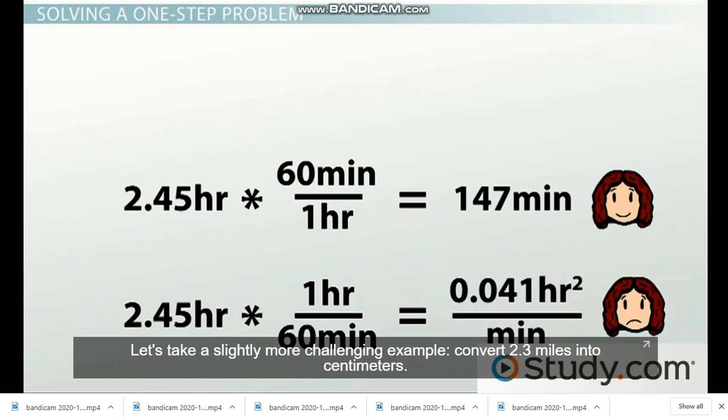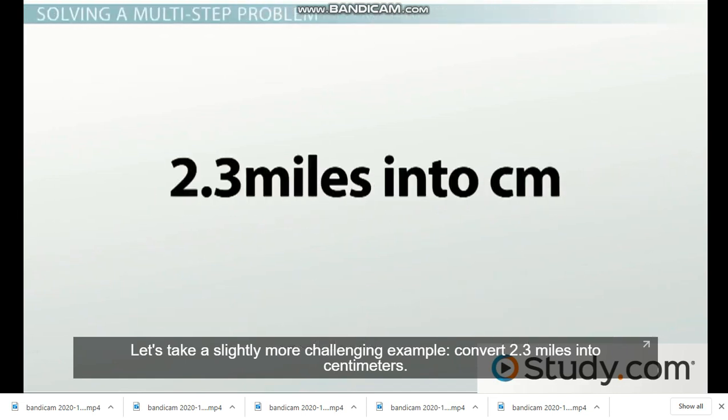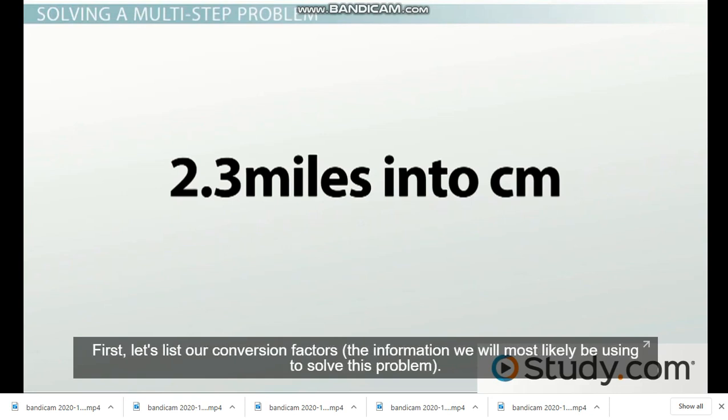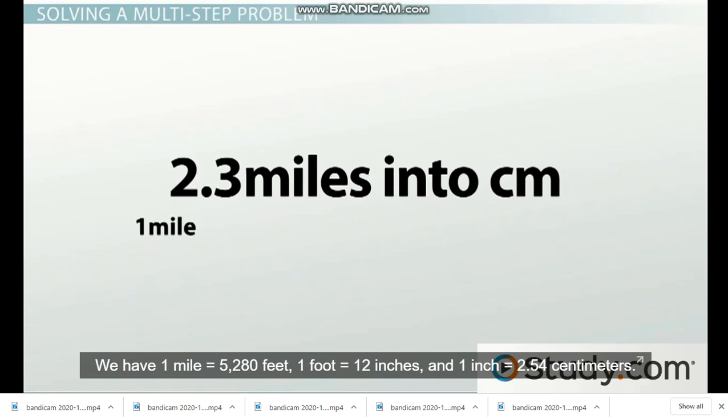Let's take a slightly more challenging example. Convert 2.3 miles into centimeters. First, let's list our conversion factors, the information we will most likely be using to solve this problem. We have 1 mile equals 5,280 feet, 1 foot equals 12 inches, and 1 inch equals 2.54 centimeters.